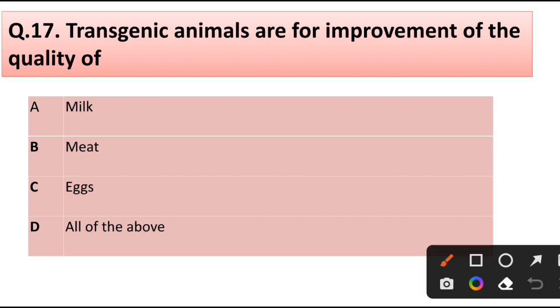Question number 17. Transgenic animals are for improvement of the quality of: milk, meat, eggs, or all of the above. Correct answer is all of the above—milk, meat, and eggs.